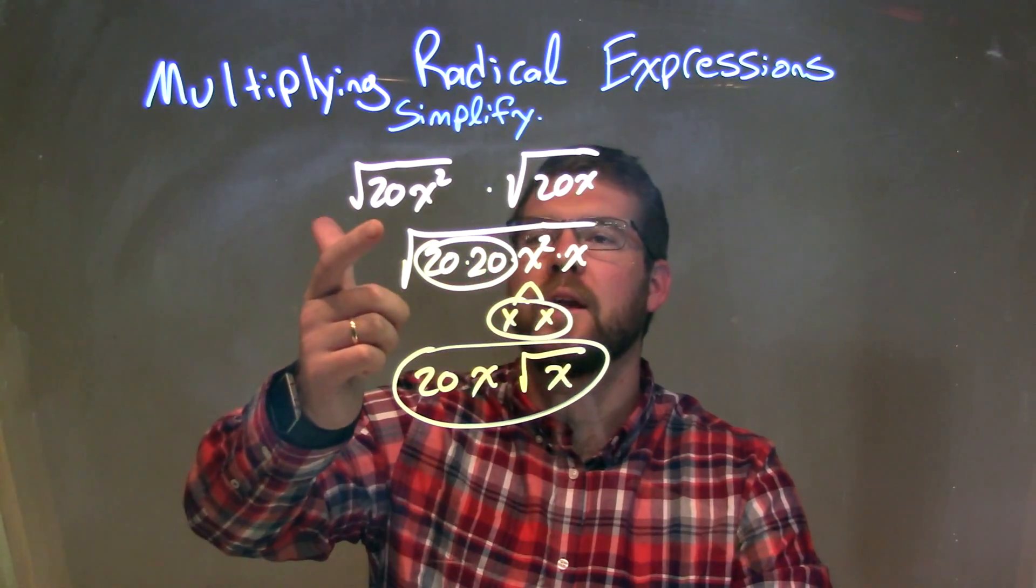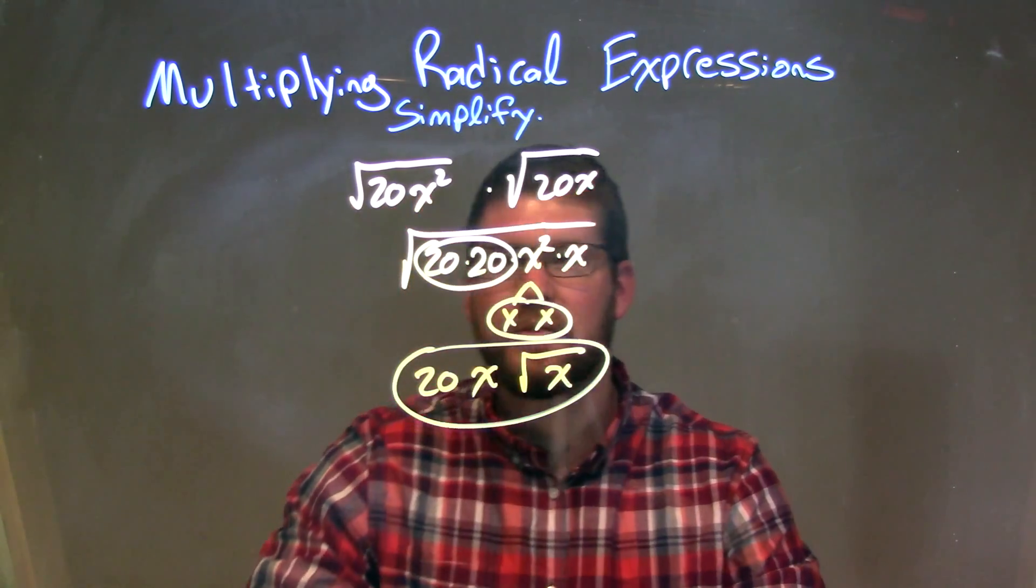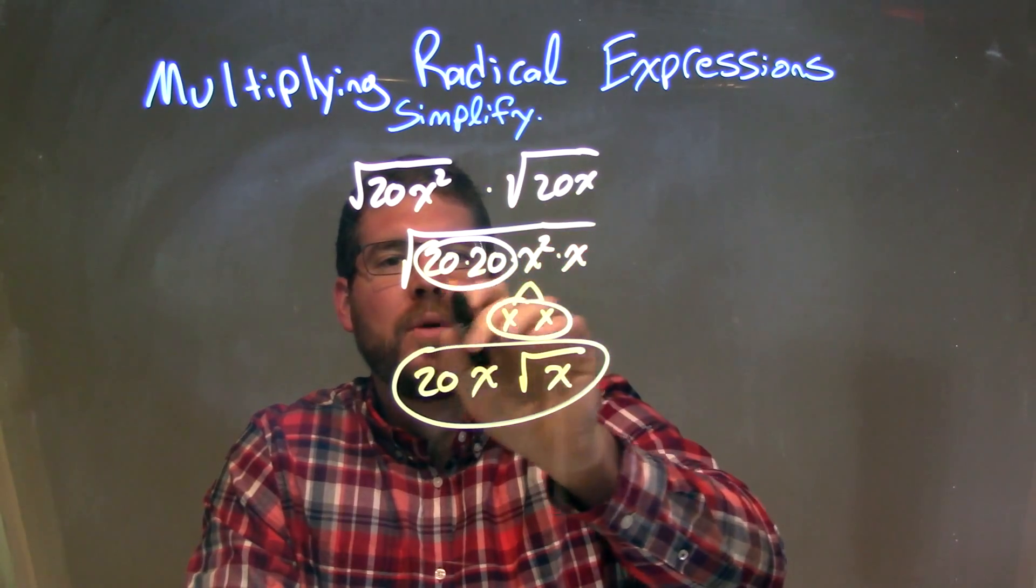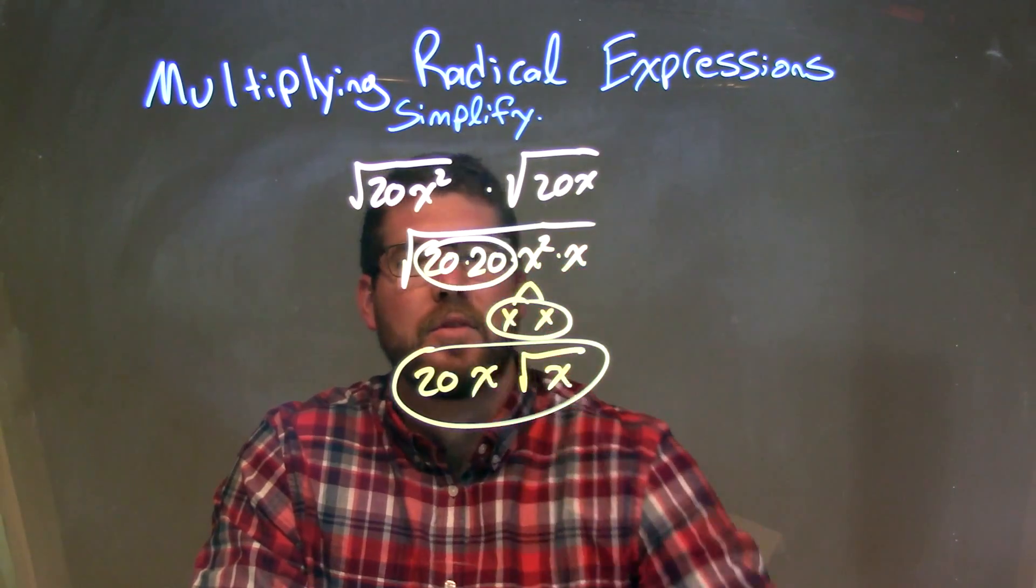So, let's recap. We're given the square root of 20x squared times the square root of 20x. Well, we can combine this under one big square root as 20 times 20 times x squared times x.